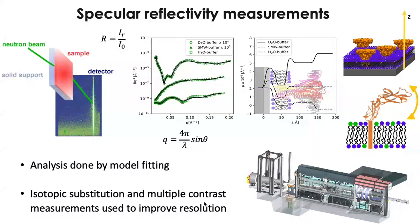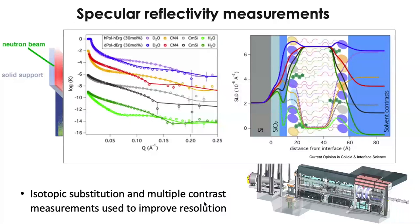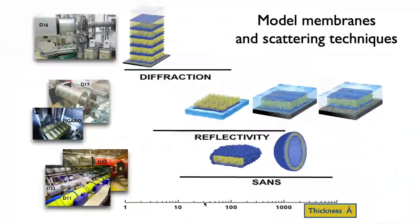To exploit the contrast variation method, we can not only use mixtures of deuterated and hydrogenous water in contact with our system, but also deuterate the system itself. Here are examples of measurements of layers with sterol inside, where we use both hydrogenous and deuterated lipids, both hydrogenous and deuterated sterol, and different water compositions. When we do the analysis, the model must satisfy this very large number of curves simultaneously, giving us confidence in the result.